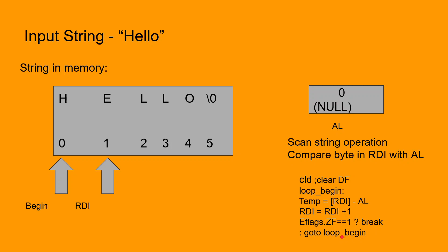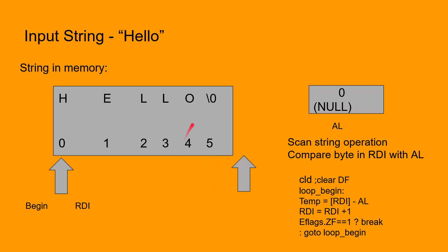If not, the repeat prefix causes the scan string to go through another iteration of the loop. In this next iteration, since there was no match in the previous case, we compare 'e' with the null byte. Then we increment the pointer, check the status flags, and if the zero flag is not set, we continue this process until we reach the end of the string. Once we reach the end, we have a match of the null byte in the string with the null byte in AL, so the ZF (zero flag) bit is set.